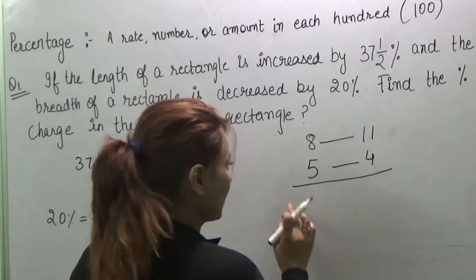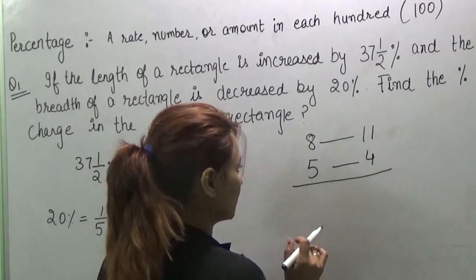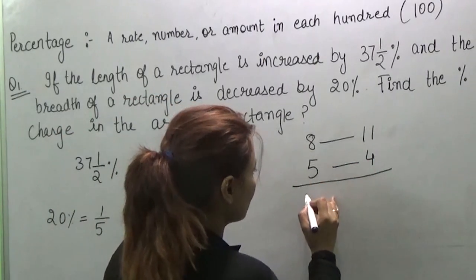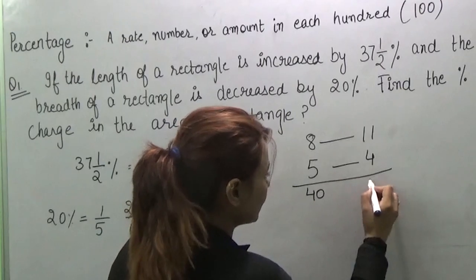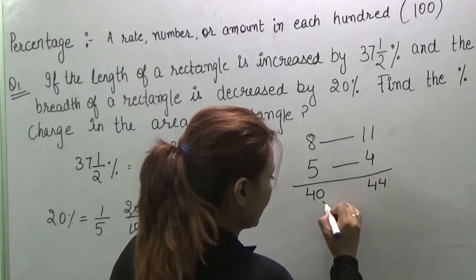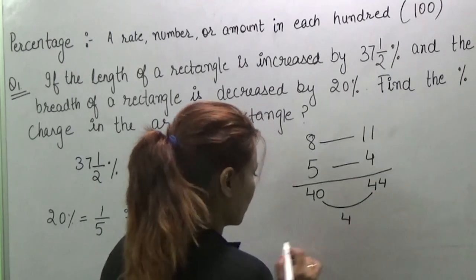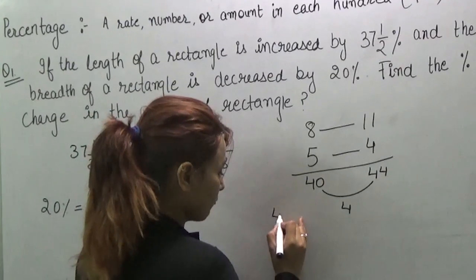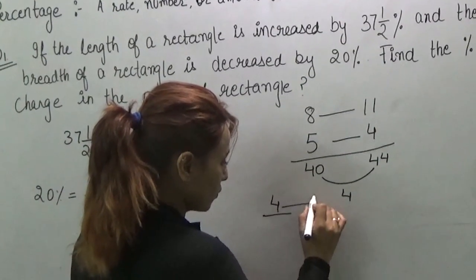So when we multiply both quantities, then we will find here 40, this is 44. And what is the difference? The difference is 4. So we get 4 over 40.